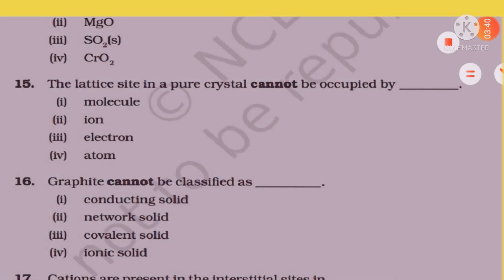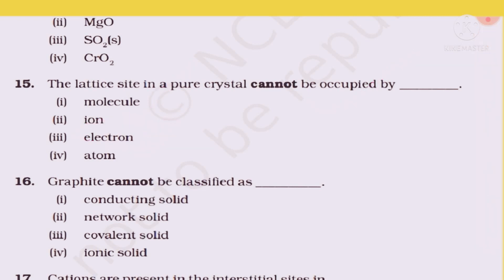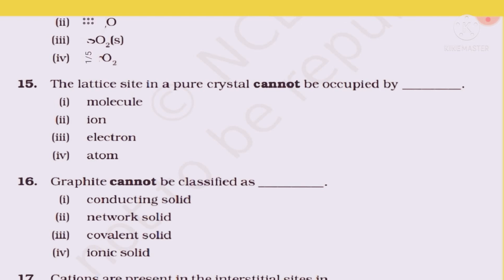Question 15: Lattice sites in a pure crystal cannot be occupied by which of the following — molecule, ion, electron, or atom? The answer is electron. In a pure crystal lattice, electrons can never occupy a lattice site. The third option, electron, is the right answer.